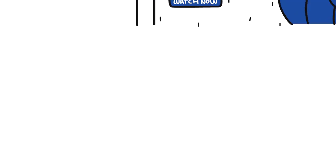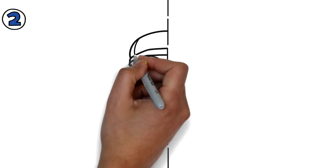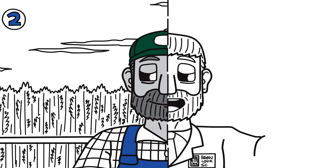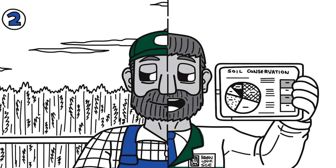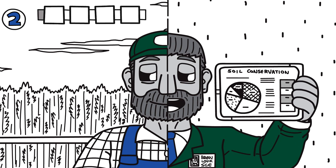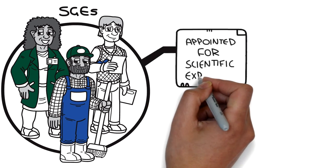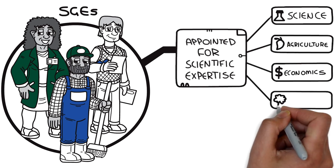Special government employees, or SGEs, are private citizens who are appointed to an advisory committee to share their expertise and judgment in specific subject areas. SGEs are considered intermittent or part-time federal employees, and as such, the federal ethics rules apply to them with certain limitations, whether or not they're paid by the government.